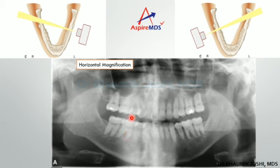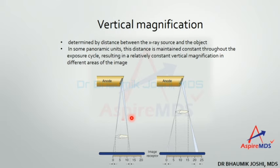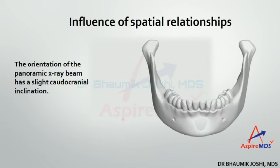Vertical magnification: the closer the object is to the receptor, the less magnification, and the farther it is, the more magnification. However, vertical magnification is controlled in panoramic units because the distance is maintained constantly throughout the exposure cycle, so it is not very significant in panoramic radiographs.